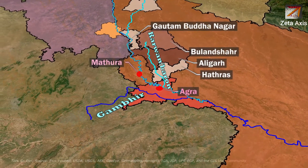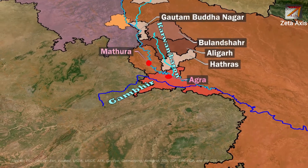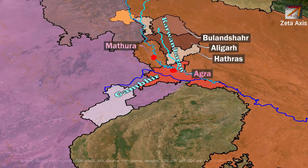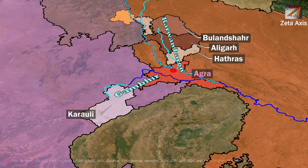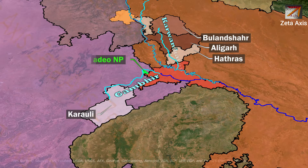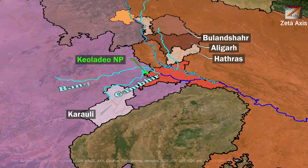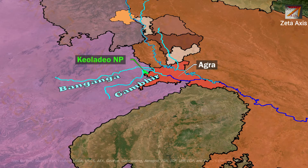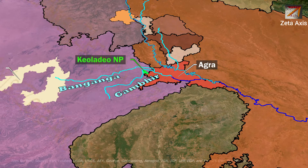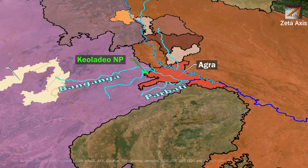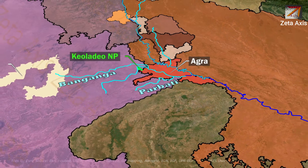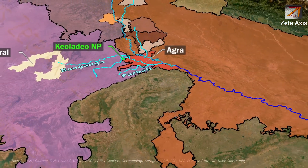The Gambiri river is also called the Utangan river. It is a seasonal river which originates in Karauli district of Rajasthan. It passes through Keoladeo National Park located in Bharatpur. The Banganga river joins the Gambiri river in Agra district; the Banganga river originates in Jaipur district. After their confluence, another river, Parvati, also joins the Gambiri river, which then flows downstream to meet the Yamuna in Agra district.